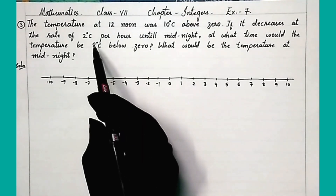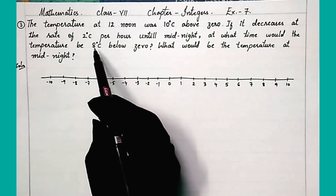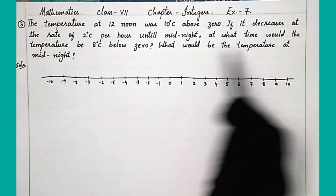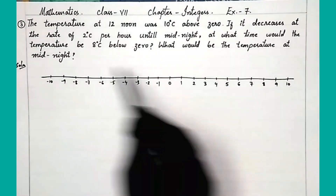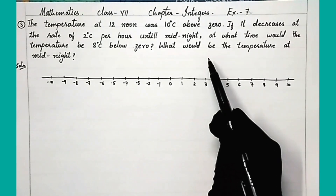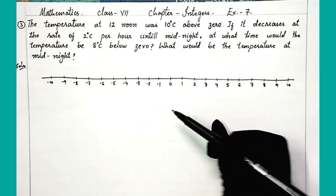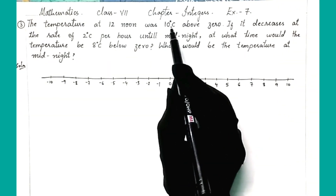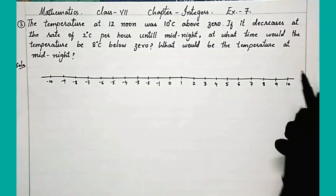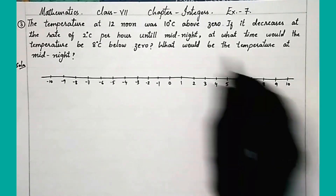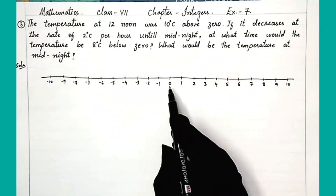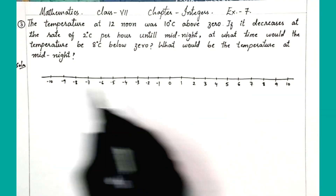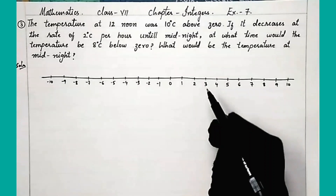We have to find out two things: first, at what time will the temperature be 8 degrees Celsius below zero, and second, what would be the temperature at midnight. At 12 noon, the temperature is 10 degrees Celsius above zero. We can find this solution with the help of a number line.